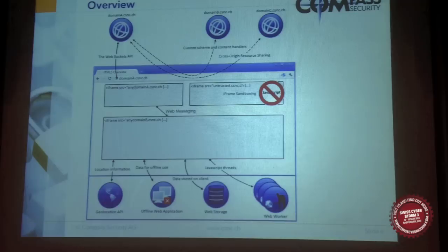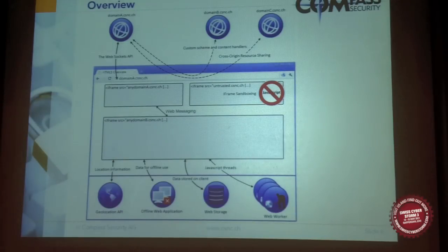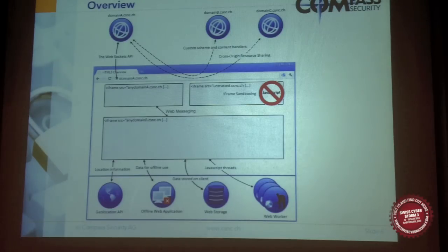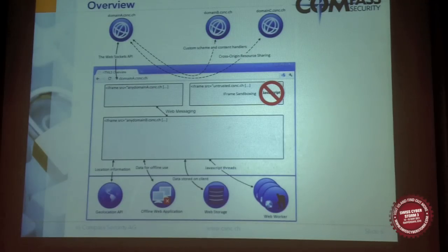Here's a short overview of all features we will discuss. First, we will have a look at cross-origin resource sharing, which allows cross-origin domain requests. Then web storage — another form of storing data for the client. Then offline web applications, which is another form of caching. Then web messaging — the new option for communication between iFrames of different domains. Then custom scheme and content handlers, which allow web applications to register themselves, for example, as a mailto link. And quick information about the geolocation API and web workers.